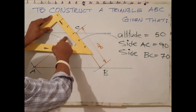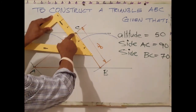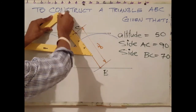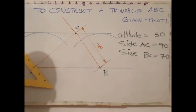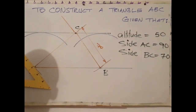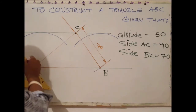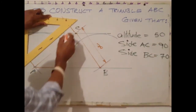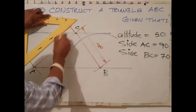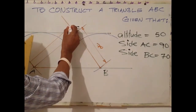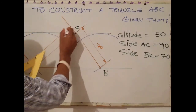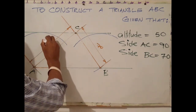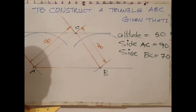I'm using the long stroke on the set square to get a perfect perpendicular line to this line right here, and I will do the same thing here. So there is 90 millimeters.